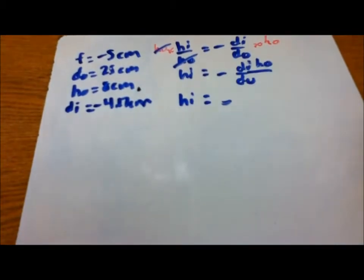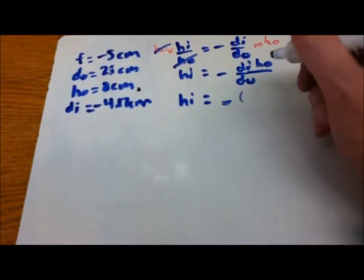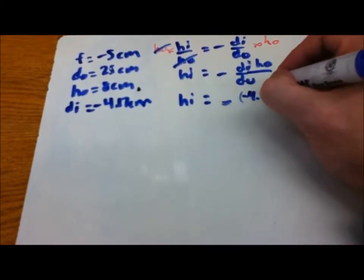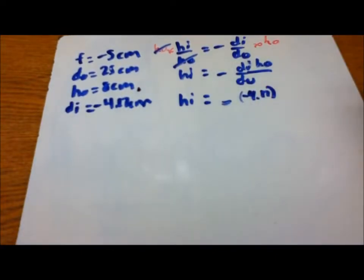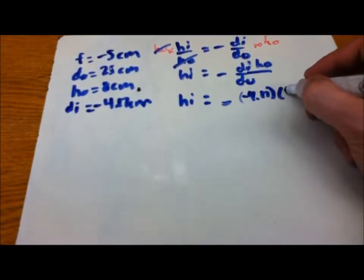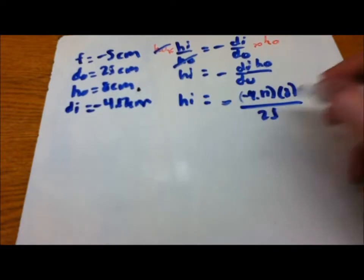So we have a minus, negative 4.17 for di, and then ho is 8. Divide that by do, which is 25.